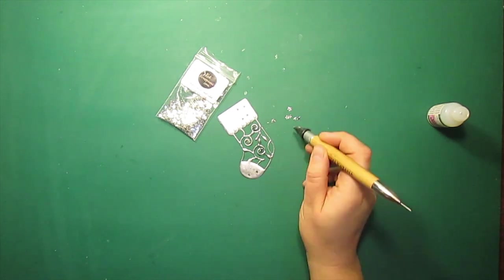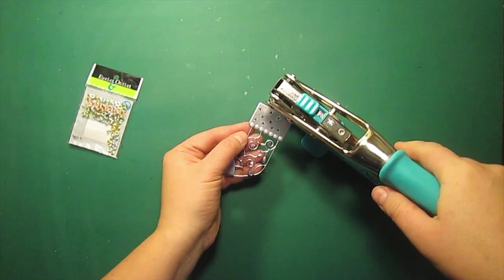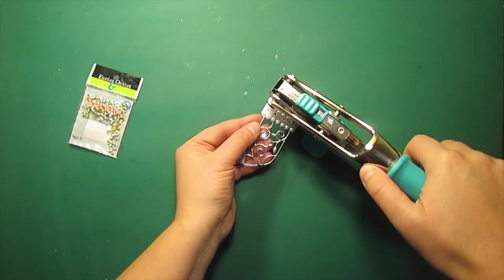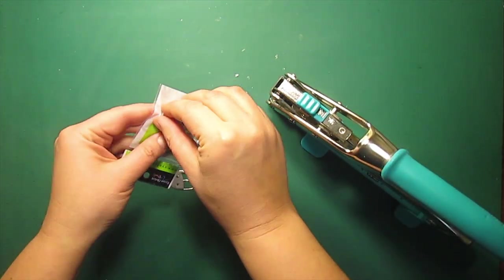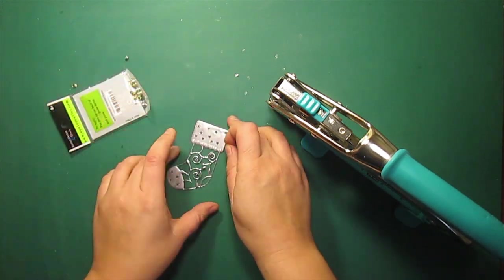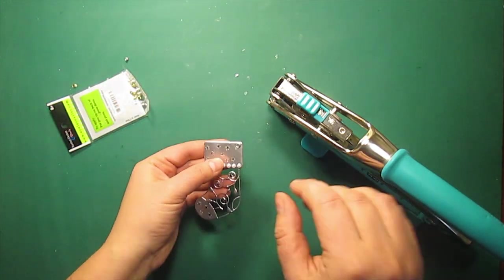The sequins I am using are by Cat Scrappiness. Next I am going to punch a small hole, one-eighth of an inch, and set a small silver eyelet using my Big Bite eyelet setter.